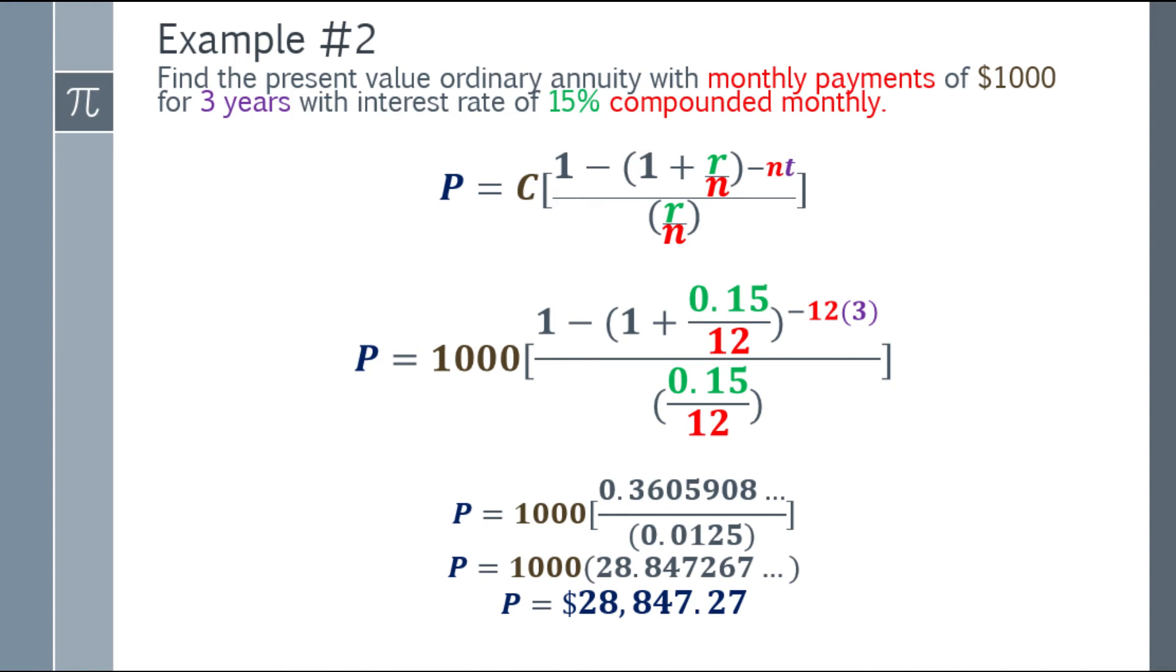For the question to find the present value ordinary annuity with monthly payments of $1,000 for 3 years with interest rate 15% compounded monthly, the answer is $28,847.27.